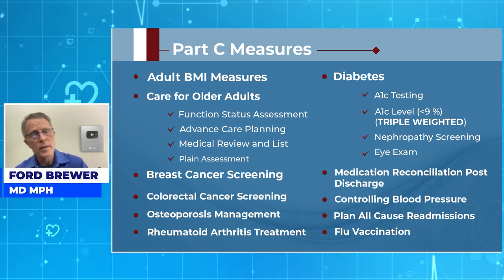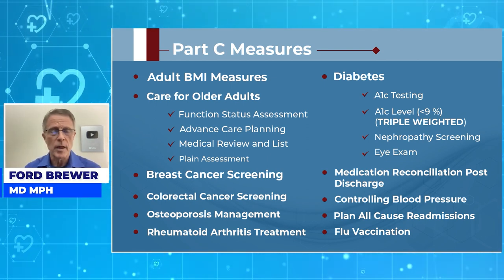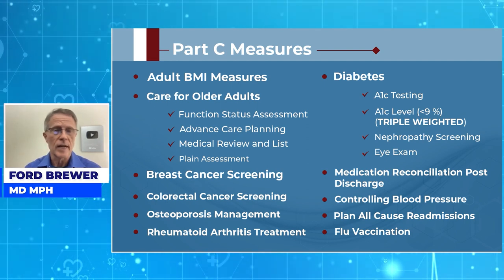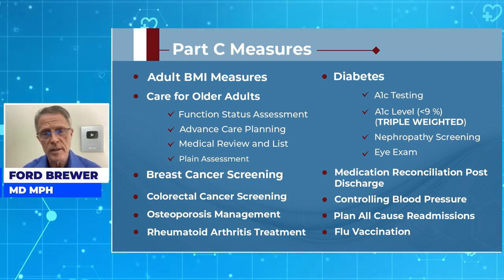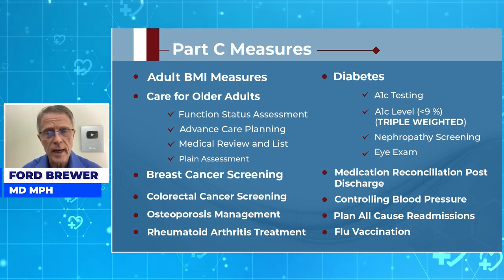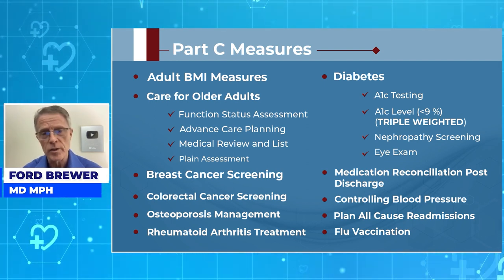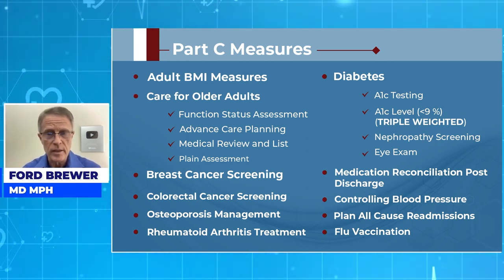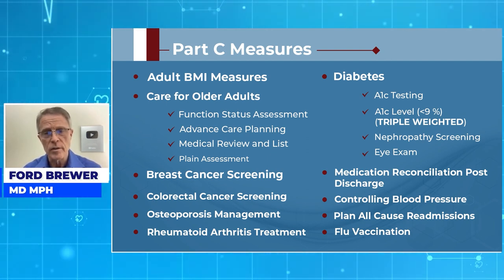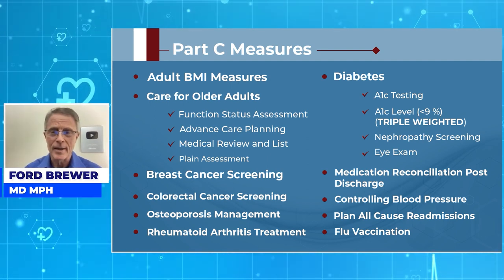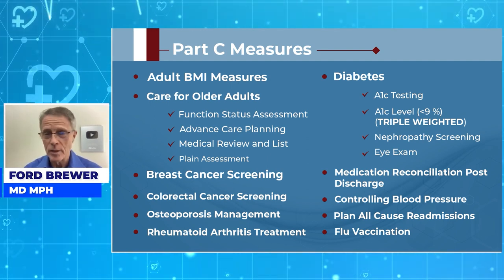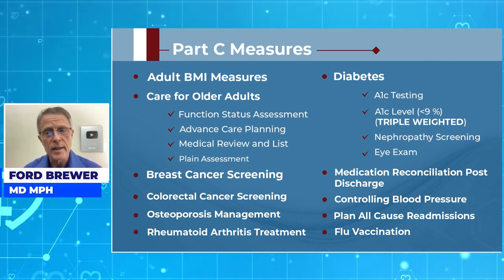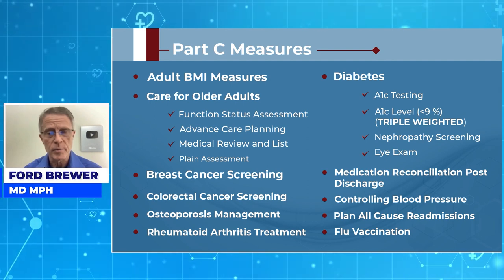Diabetes has several measures because it is one of the most important population-based care problems. It leads to Kidney Disease, Eye Disease, Heart Disease, Strokes, and Dementia. Diabetes has four measures: A1C testing and the A1C level itself — they want to make sure you're testing and that the level is less than nine percent. That measure is triple weighted. Also Nephropathy screening for kidney damage and eye exam screening.